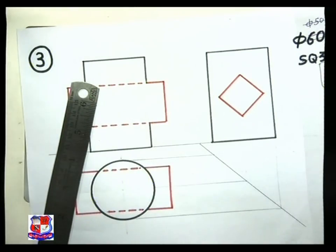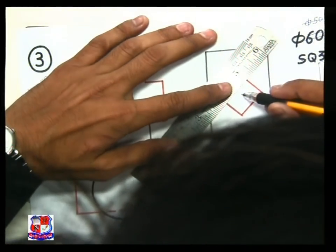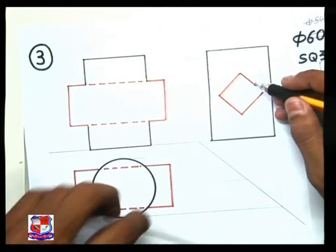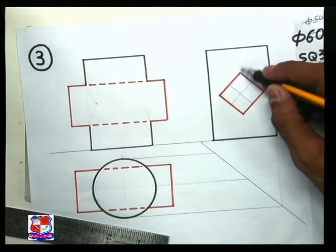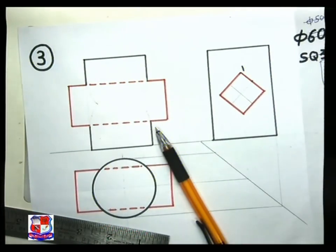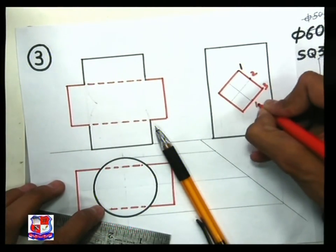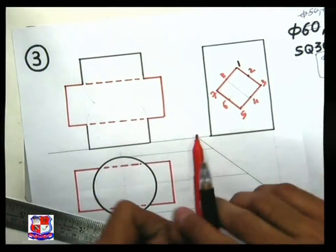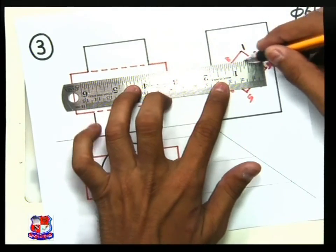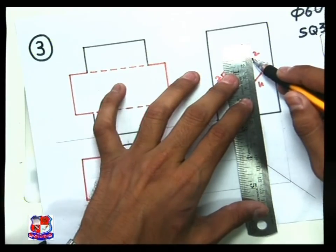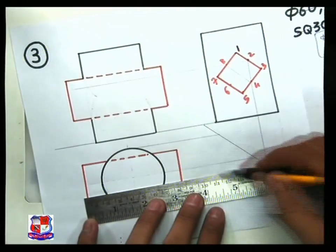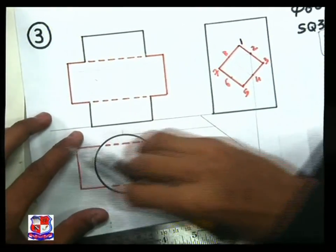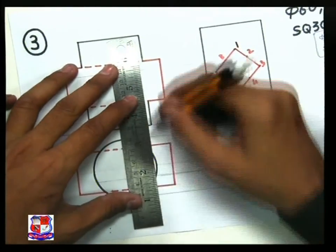To find intermediate points, divide this square into two equal parts. It is not compulsory to divide into equal parts, but it helps find intermediate points. Label the points: point one, point two, point three, point four, five, six, seven, and eight — eight points in total. For point number two, draw a straight horizontal projection line from the middle, transfer to the top view where it cuts the circle at two points, and from those two points draw straight vertical lines.